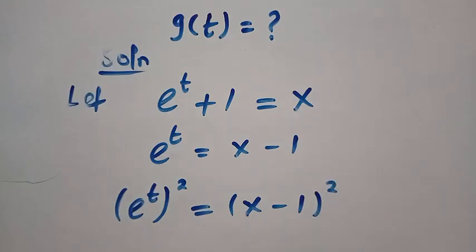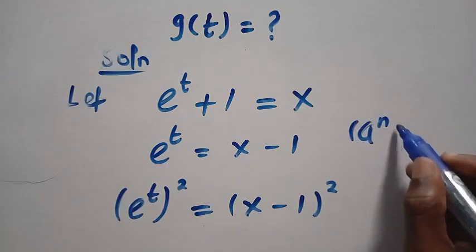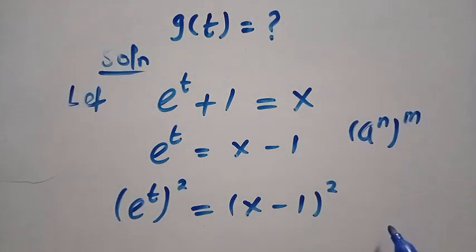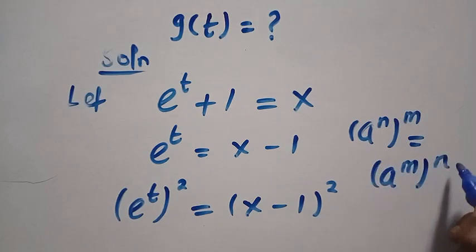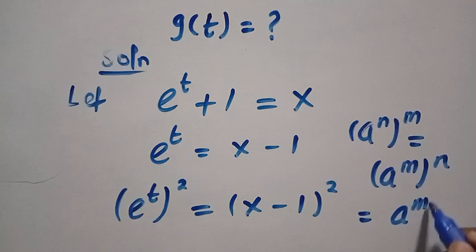And when we have a^n raised to the power of m, this is the same thing as a^m raised to the power of n. And everything equals a^(mn), or a^(nm).